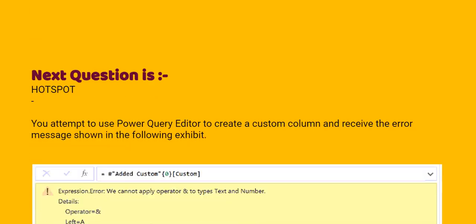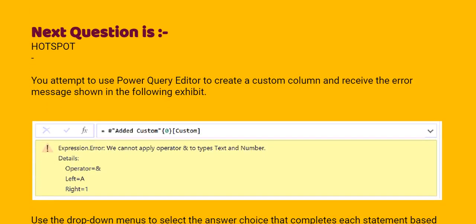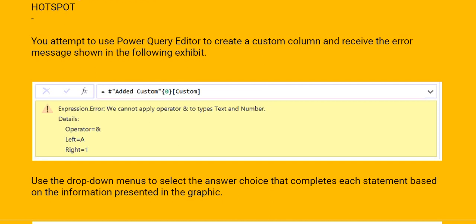Next one. You attempt to use Power Query Editor to create a custom column to receive the error message shown in the exhibit. See the given exhibit. Use the drop-down menus to select the answer choice that completes each statement based on the information presented in the graphic.